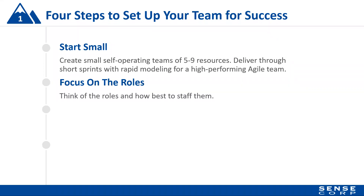The next step is focusing on the roles. Think of the five roles I mentioned and how best to staff them. Don't just default to putting someone in a role because they've indicated interest or because they're available — really think about whether the person fits the role and has the necessary skills. Often we will come in and serve as interim data scientist or data engineer while a company is figuring out their staffing needs, so they can be set up to do that in the best way possible.